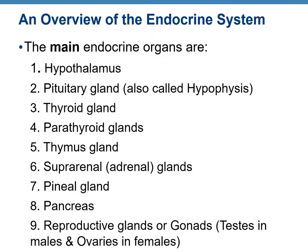There are nine major endocrine organs in the body: hypothalamus, the pituitary gland (also known as hypophysis, the master endocrine gland), thyroid gland, parathyroid gland, thymus, the suprarenal or adrenal glands, pineal gland, pancreas, and the reproductive glands — the gonads — meaning the testes in males and the ovaries in females.